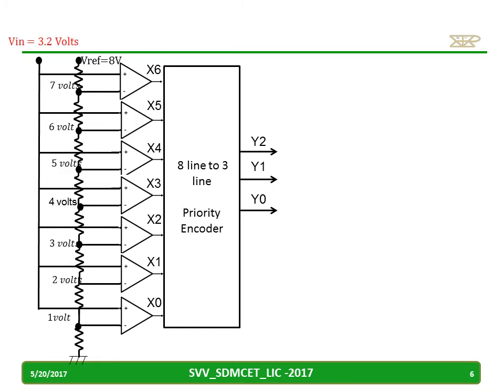Let us consider the input. With V reference set to 8 volts, I am getting 1 volt, 2 volt, 3 volt for each op-amp tap. When I apply Vin equal to 3.2 volts, the output of each op-amp: X0, X1, X2 will be high because the non-inverting terminal has more voltage. The remaining are low, giving a priority encoder output of 0, 1, 1.